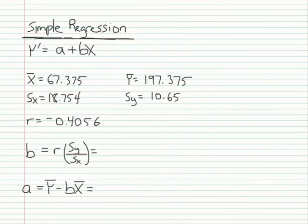We can use simple regression to look at the way the kilometers run per week predict marathon finishing times. The prediction equation is here where y prime is the marathon finishing time that's predicted. a is an intercept coefficient, b is a slope coefficient, and x is a value of the kilometers per week.